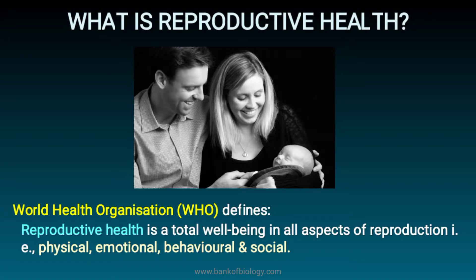What is Reproductive Health? WHO, the World Health Organization, defines reproductive health as a total well-being in all aspects of reproduction — meaning how complete or fertile an individual is, including their physical condition, emotional, behavioral, and social characteristics. This refers to how capable an individual is of producing new progenies or offspring.